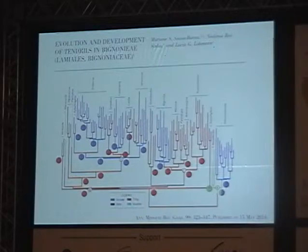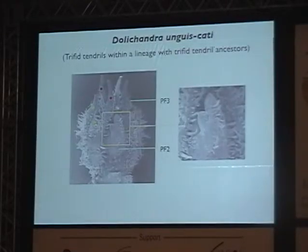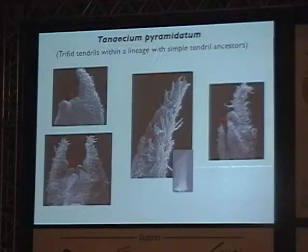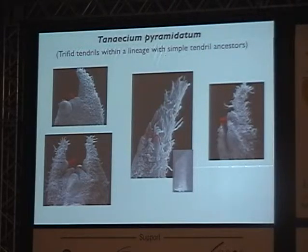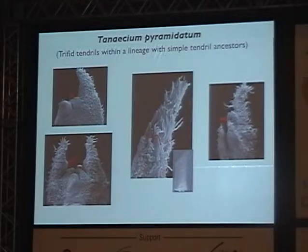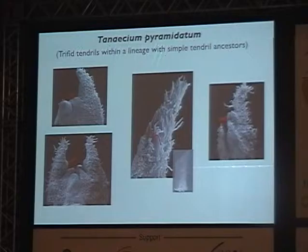We wanted to go back to anatomy and ontogeny to understand what was happening in tendril development. We studied the ontogeny of species with trifid tendrils whose ancestors also had trifid tendrils — these species developed trifid tendrils very early in development. But when we looked at species with trifid tendrils nested within a lineage that had simple tendril ancestors, those species started developing as simple tendrils and only much later developed trifid tendrils, allowing us to recapitulate the evolutionary history of these morphological features.